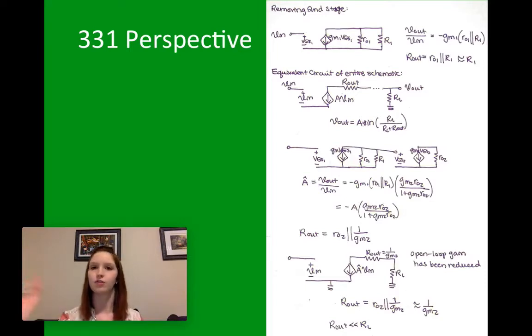You can see that Vout now is A times Vin of RL over RL plus Rout, which is a voltage divider. And then you continue to add components and see the gain again in this third circuit is negative A times gm2 r02 over 1 plus gm2 times r02.